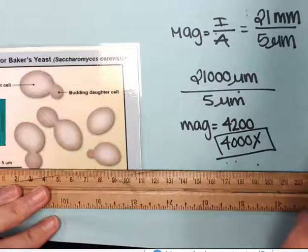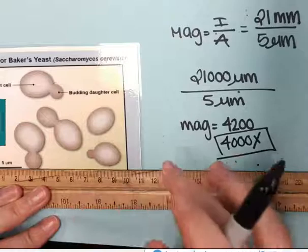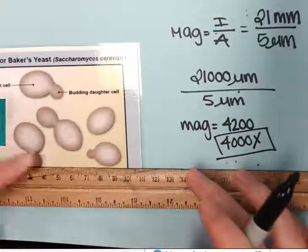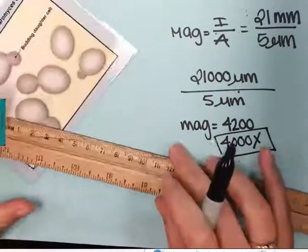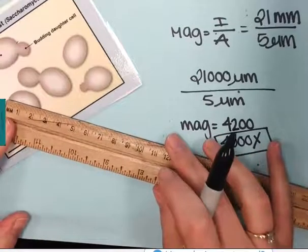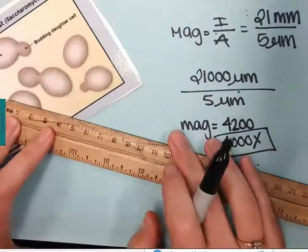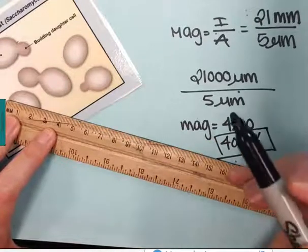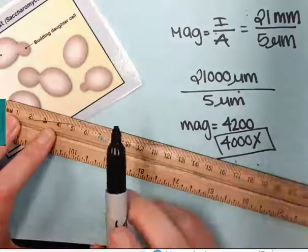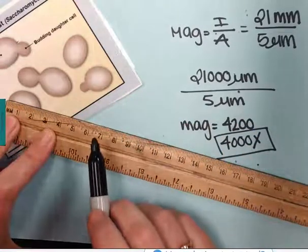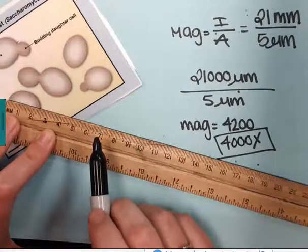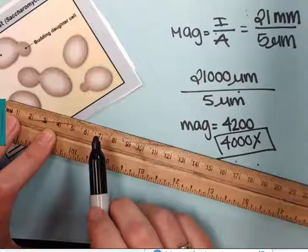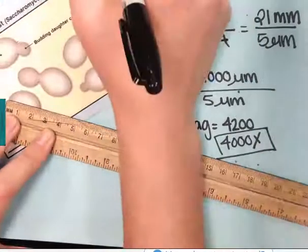If I want to know the approximate size of one of these yeast cells, I can go in and I can measure it. Now I know my magnification, and I want to know how big that actual yeast cell is. So I am going to measure it and it is 23 millimeters.